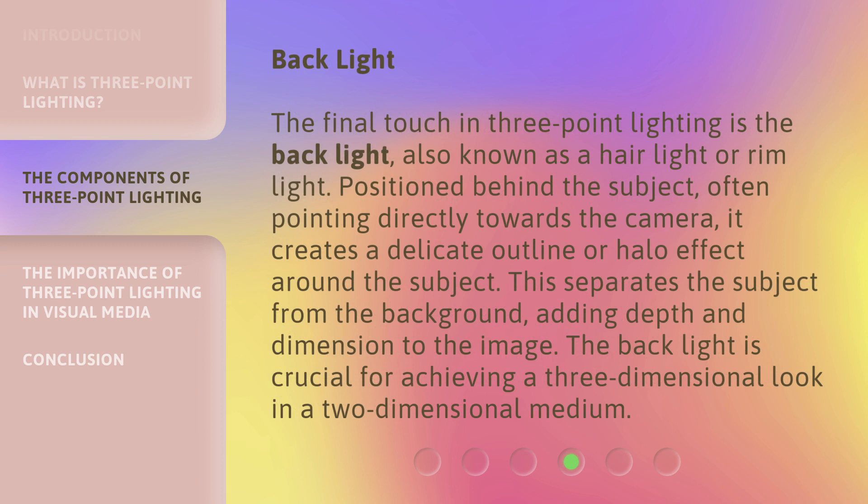The final touch in three-point lighting is the backlight, also known as a hair light or rim light. Positioned behind the subject, often pointing directly towards the camera, it creates a delicate outline or halo effect around the subject. This separates the subject from the background, adding depth and dimension to the image. The backlight is crucial for achieving a three-dimensional look in a two-dimensional medium.